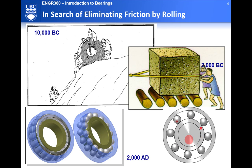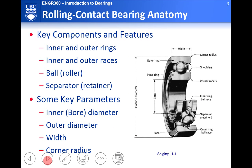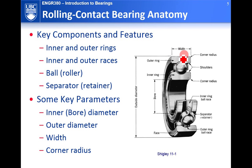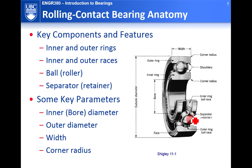Bearings have become a very large industry and are used in many different applications. Key components and features include the ball size, which is a key parameter; the width; the outer diameter; and the corner radius. The corner radius defined by the catalog acts as a constraint for the fillet of the shaft shoulder. The bearing consists of an inner ring, an outer ring, a cage, and balls. The cage is also called a retainer or separator.